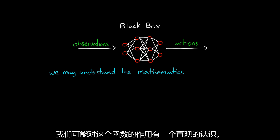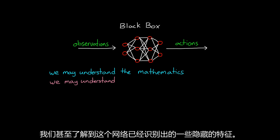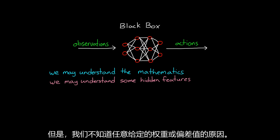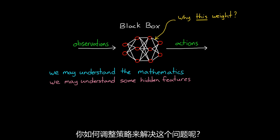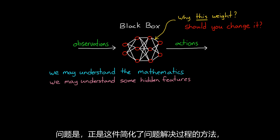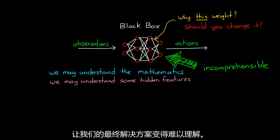We may have an intuitive sense of how this function operates — the mathematics that convert observations to actions — and we may even understand some of the hidden features that the network has identified. However, we don't know the reason behind the value of any given weight or bias. So if the policy doesn't meet a specification, or if the plant or the rest of the operating environment changes, how do you adjust the policy to address that? Which weight or bias do you change? The problem is that the very thing that made solving the problem easier — condensing all of that difficult logic down into a single black box function — has made our final solution incomprehensible.